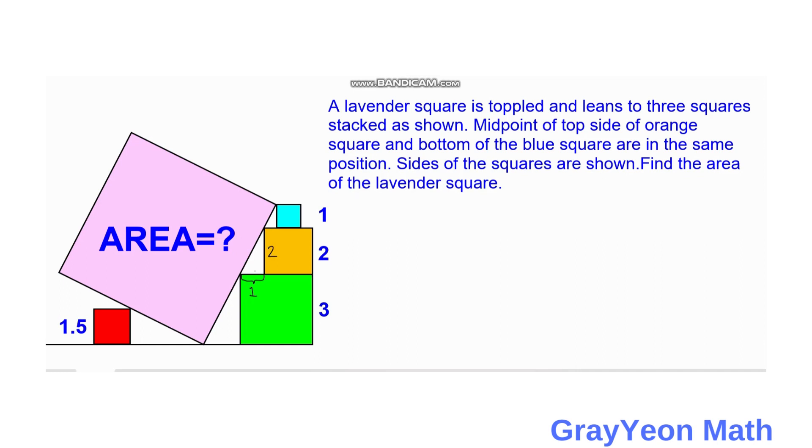So for the ratio of the sides of this triangle formed between the lavender square and these squares, the ratio is for the vertical we have 2 over 1 equal to...